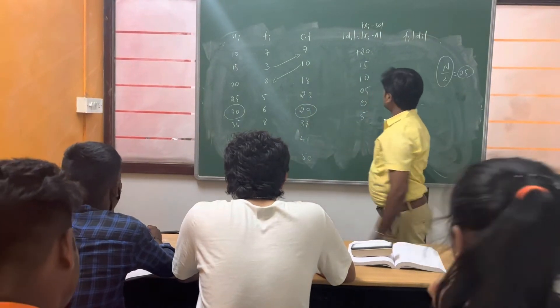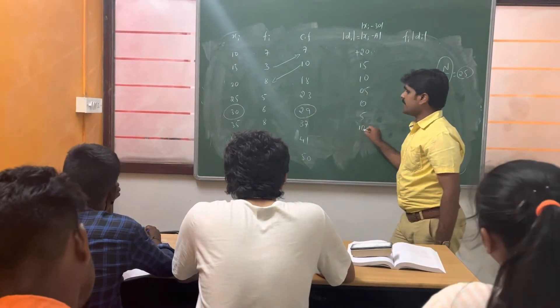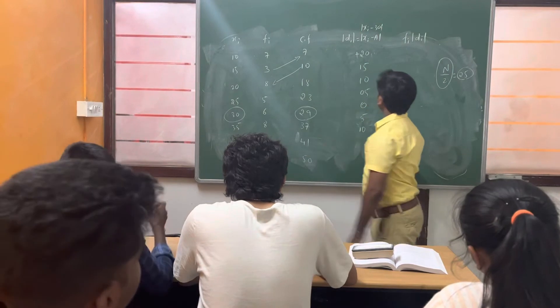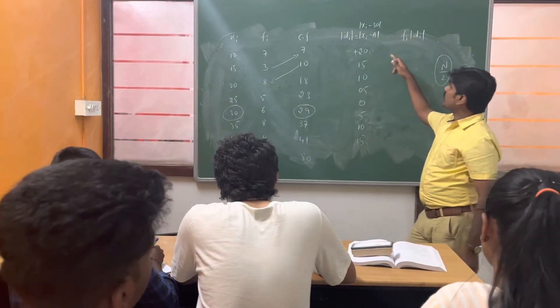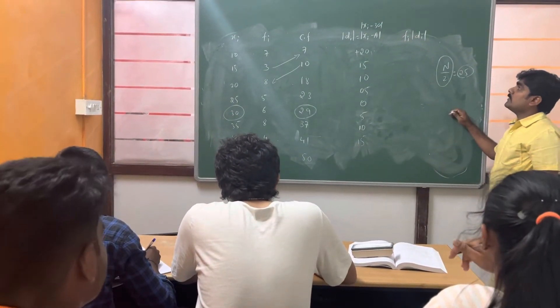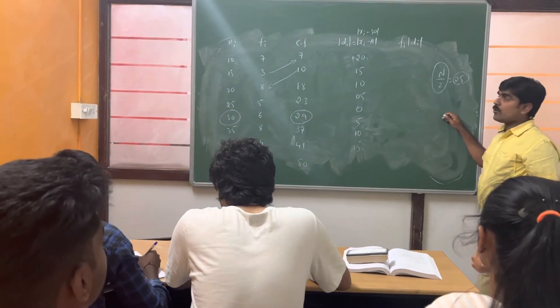40 minus 30, it is 10. Then 45 minus 30, it is 15. So, this is what our di. That is mod di. It is always positive.